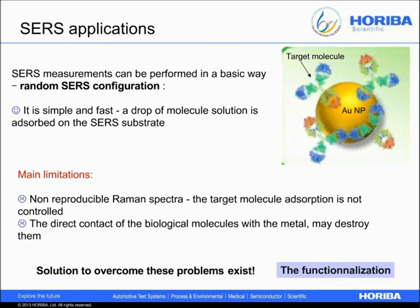In many cases, the functionalization can be specific — it will recognize only certain target molecules, so the SERS detection can also be specific. However, this configuration can also have some limitations. Firstly, very long functionalization molecules cannot be used because the target molecule will be too far from the nanoparticle and the SERS effect will decrease. Secondly, the functionalization is specific for each molecule, so for a new target molecule a new functionalization will be needed. Moreover, the measurements made in this configuration are usually time-demanding. So there are advantages and limitations for both configurations — random or oriented.